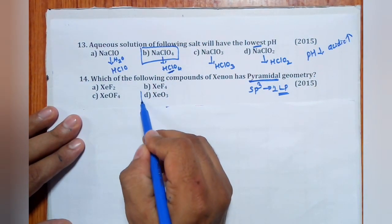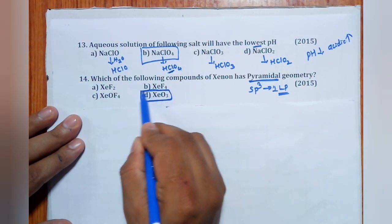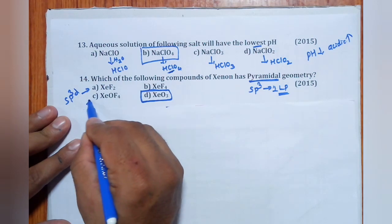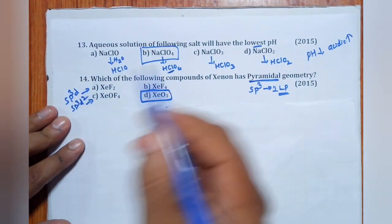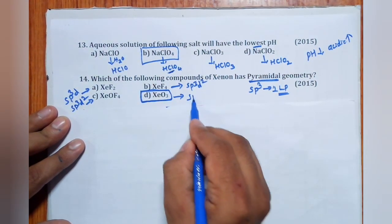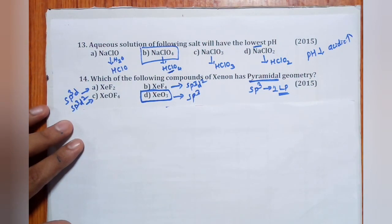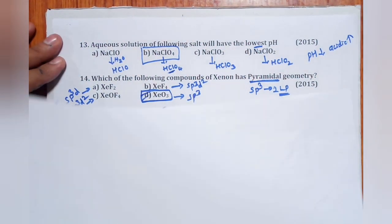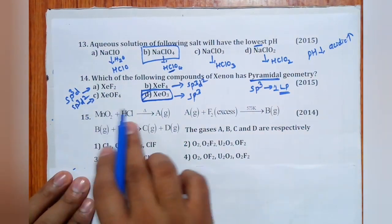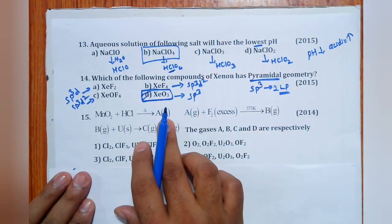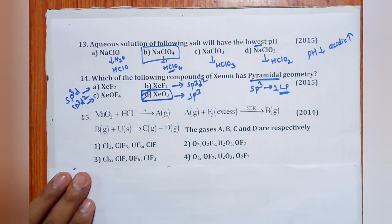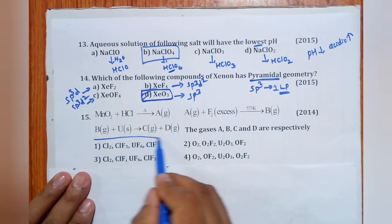Question 14: Which xenon compound has pyramidal geometry? Pyramidal = sp3 with one lone pair. Using the hybridization formula for XeO3: H = ½(8 + 0) = 4, giving sp3 hybridization with one lone pair → pyramidal. XeOF4 and XeF4 give sp3d2 hybridization. Therefore XeO3 is pyramidal. Answer is (d).